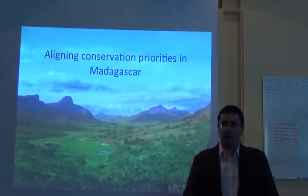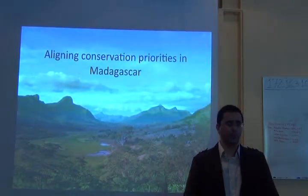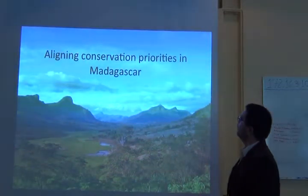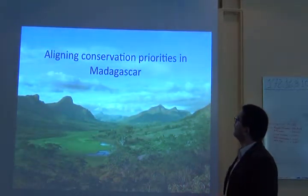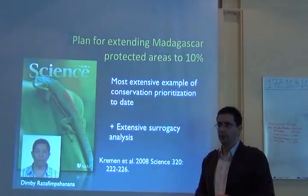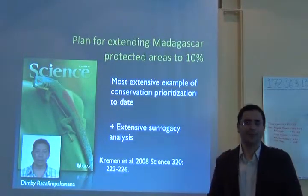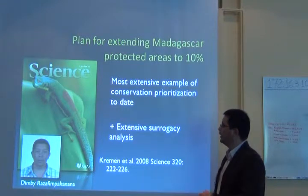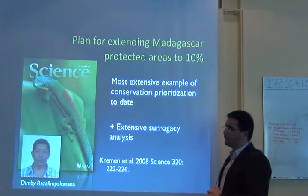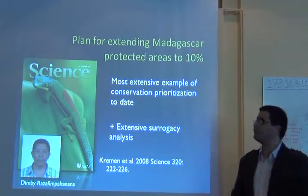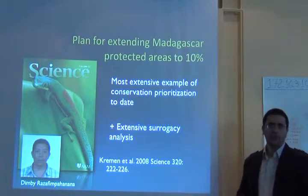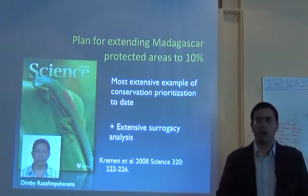Let me show you some recent examples using Zonation. I'm picking this one — aligning conservation priorities in Madagascar — partly because Dimby is one of the authors of this paper that was published in Science. This is one of the most extensive examples of conservation prioritization we have.